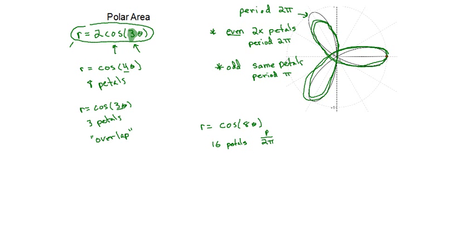But, if I only want to know one petal, I have to take that full 2π to go all the way around, and I've got 16 different petals. So, the period for one petal will be π over 8.